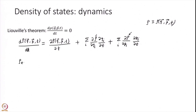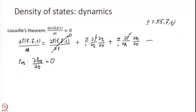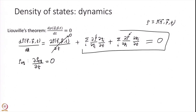We are interested in rho equilibrium — that is what we are trying to find in this module. In the last module we specified an important property: del rho equilibrium over del t is 0, meaning rho equilibrium does not explicitly depend on time — it depends only on Q and P. That is the very meaning of equilibrium. So I can get rid of that term. The whole expression is 0 by Liouville's theorem.